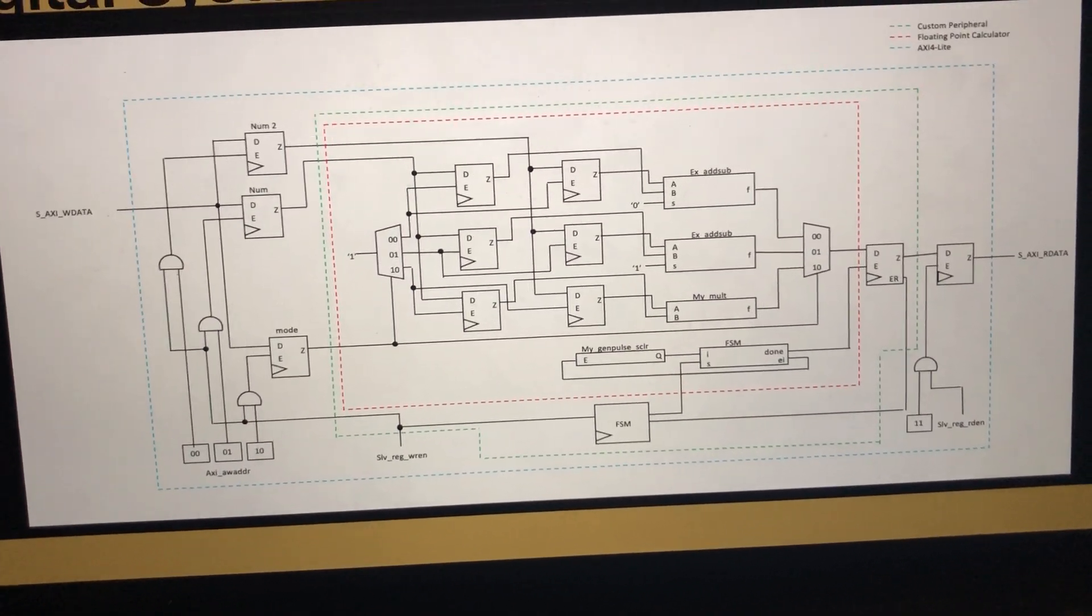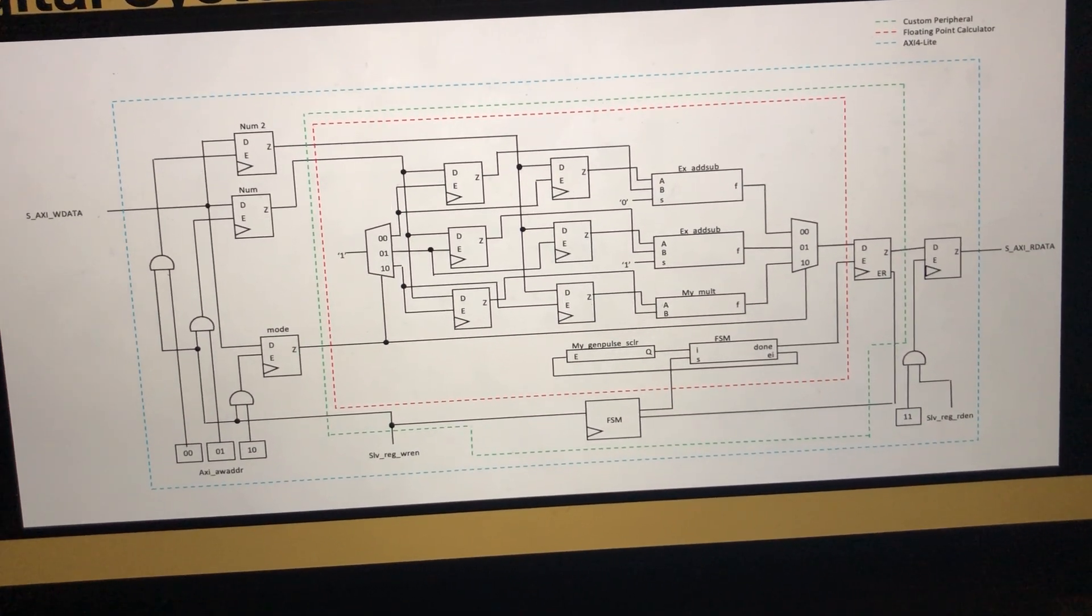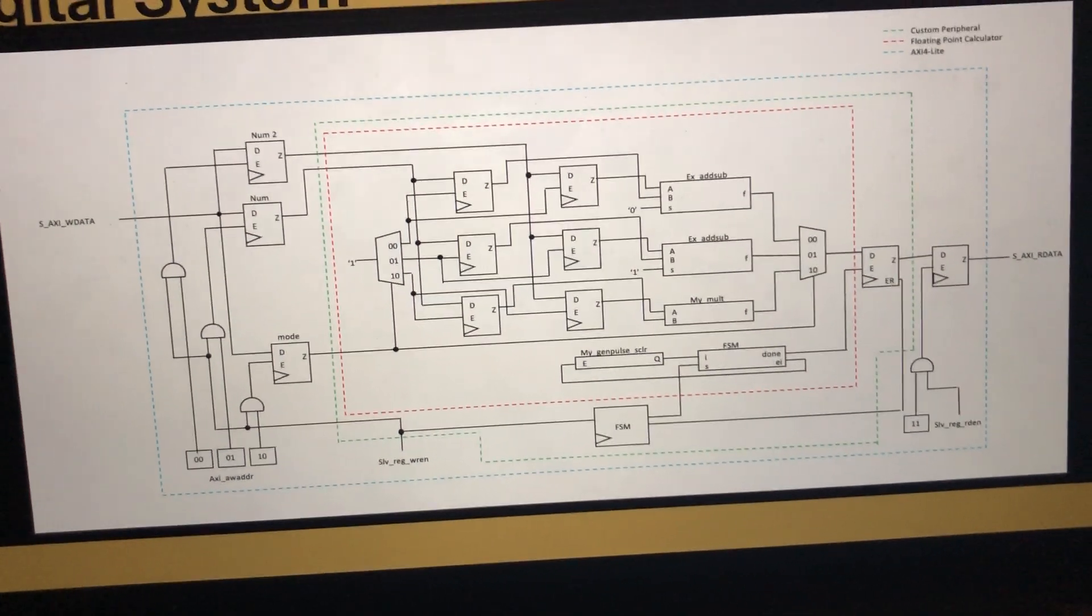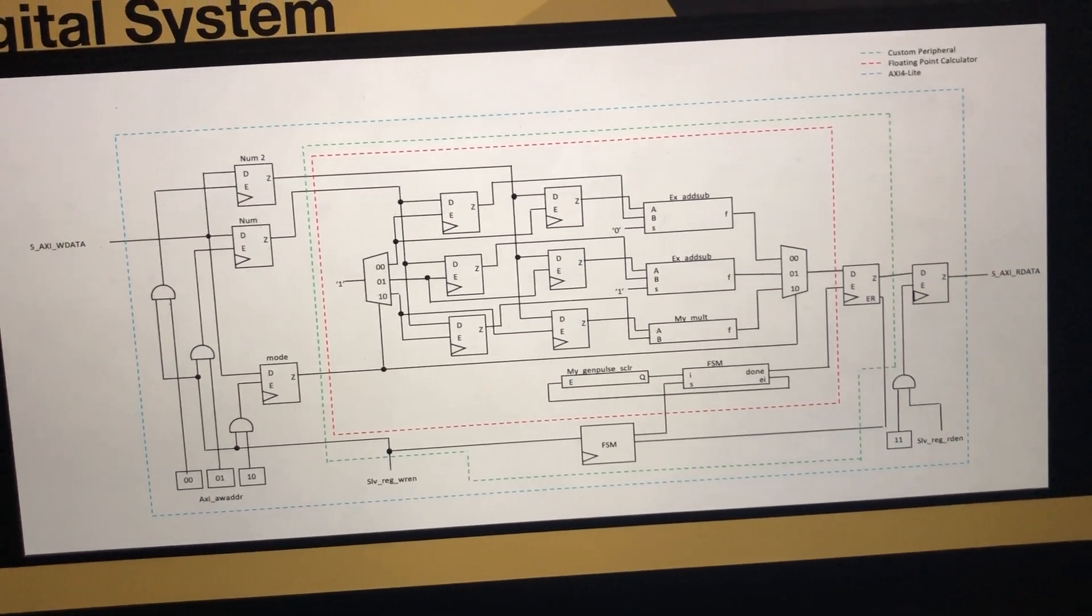The mode signal is used again to select which function block to output data from. It is then sent into a buffer register.